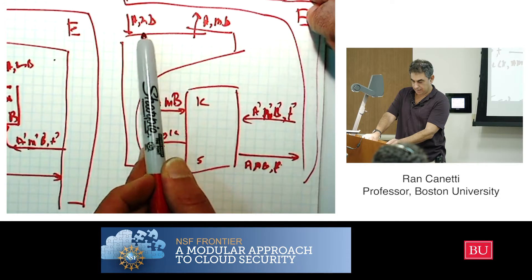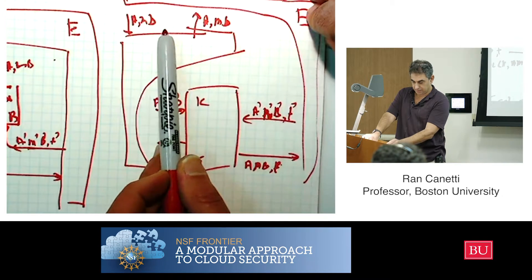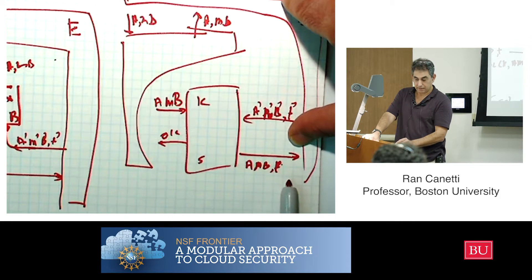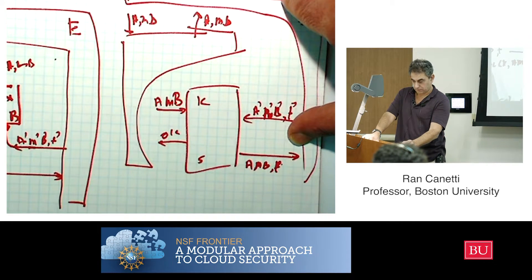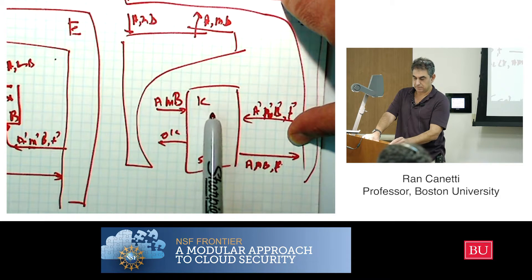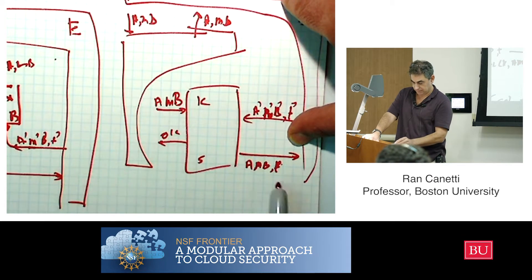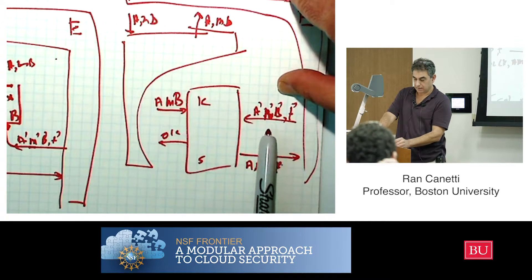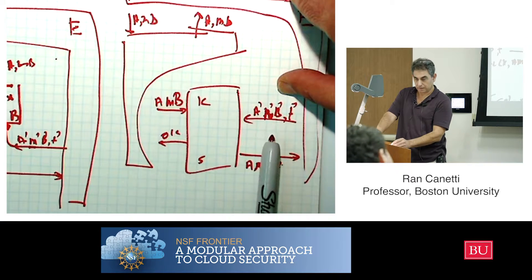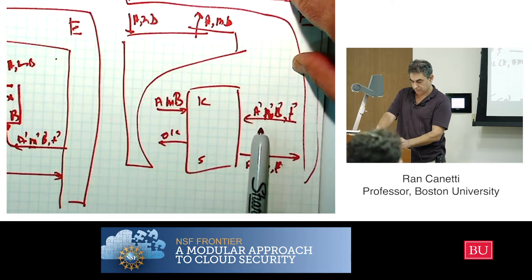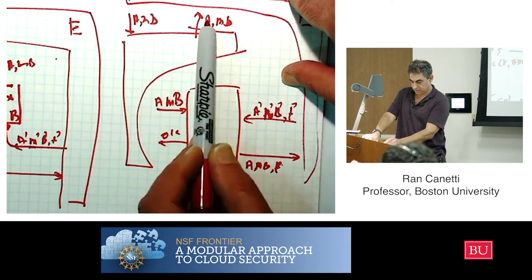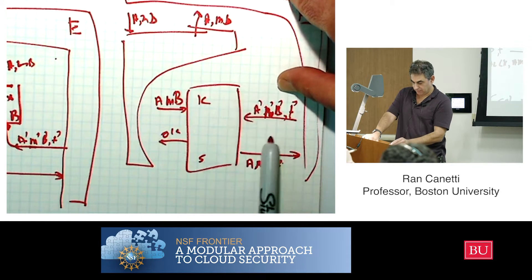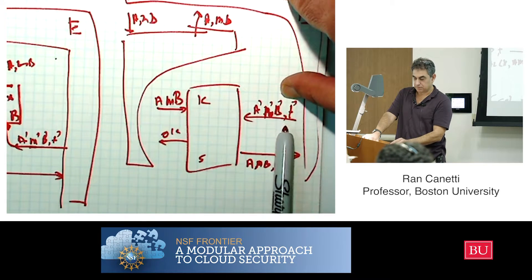The environment is putting A, M and B here, and it gets A, M, B, and a tag, exactly the same distribution in the other world. So here the tag, the key was generated by the simulator, here by the party, but it doesn't matter, it gets exactly the same distribution. And again it outputs, it generates this potentially forged tuple, and let's see what happens here.